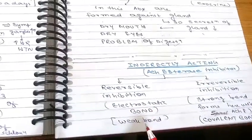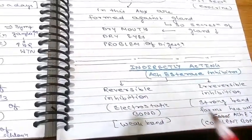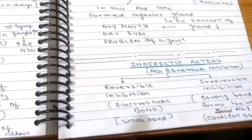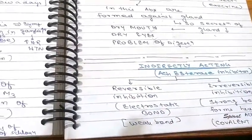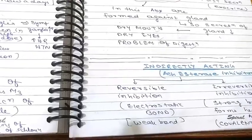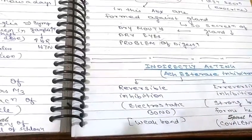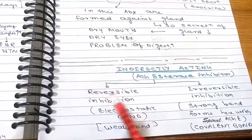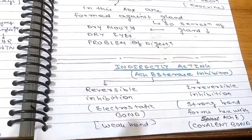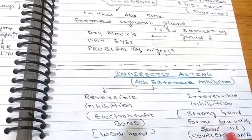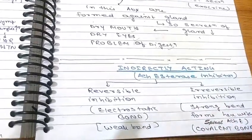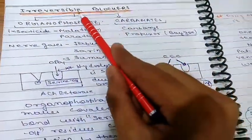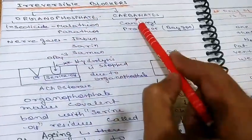In reversible inhibition, an electrostatic bond is formed. In our body, electrostatic bonds are weak because the many ions in plasma can cause easy breakage of this bond. Irreversible inhibition involves formation of a stronger covalent bond. Irreversible inhibitors are divided into organophosphates and carbamates. Organophosphates include the insecticides malathion and parathion, and nerve gases sarin, soman, and tabun. Carbamates include carbaryl and propoxur, also known as Baygon.